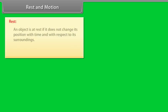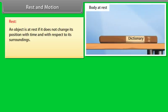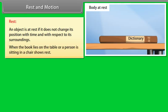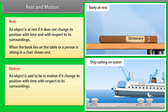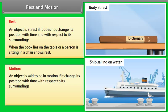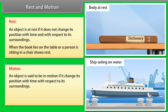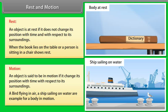Rest and Motion: An object is said to be at rest if it does not change its position with time and with respect to its surroundings. When a book lies on a table or a person sits in a chair, it shows rest. An object is said to be in motion if it changes its position with time with respect to its surroundings. A bird flying in air or a ship sailing on water are examples of a body in motion.